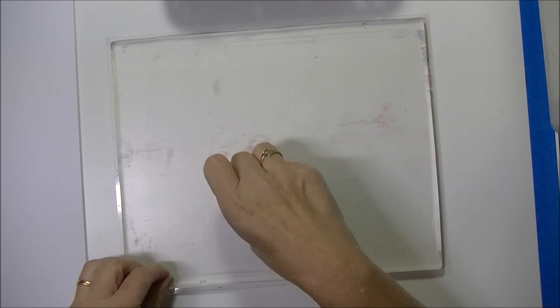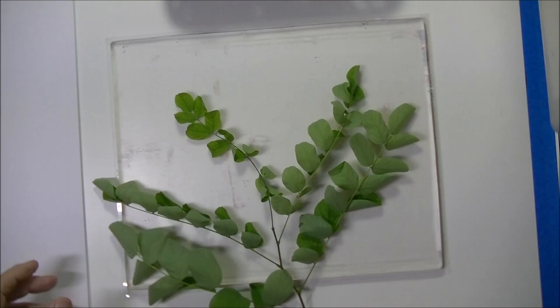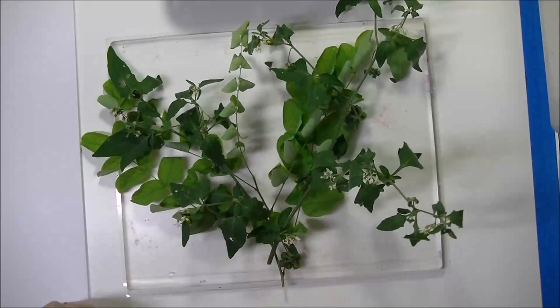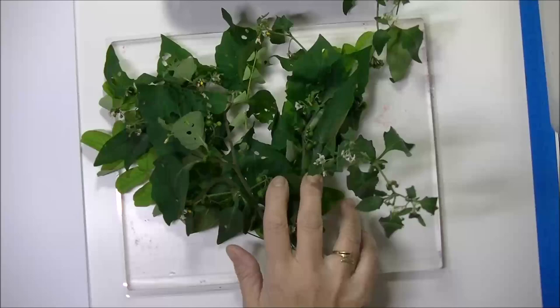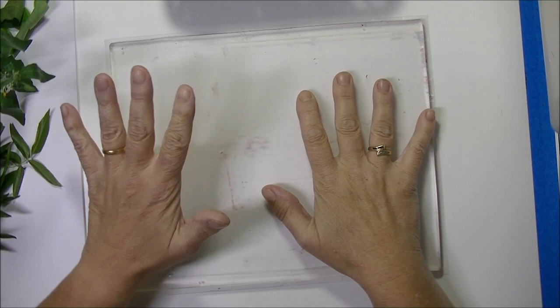Alors aujourd'hui nous allons jouer avec des feuillages et pour jouer avec des feuillages je suis allée dans mon jardin, j'ai découpé quelques branches parce qu'on sait assez facilement maintenant travailler avec des feuilles individuelles mais j'avais envie de voir ce que pouvait donner le travail avec des petites branches. Je vais donc déposer une première couleur de peinture acrylique, je vais prendre du orange.